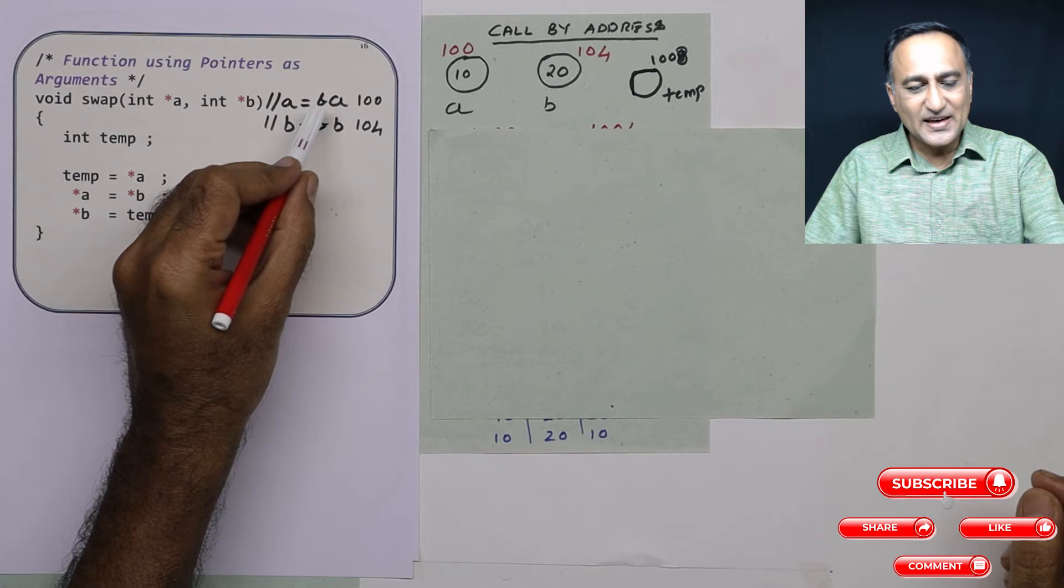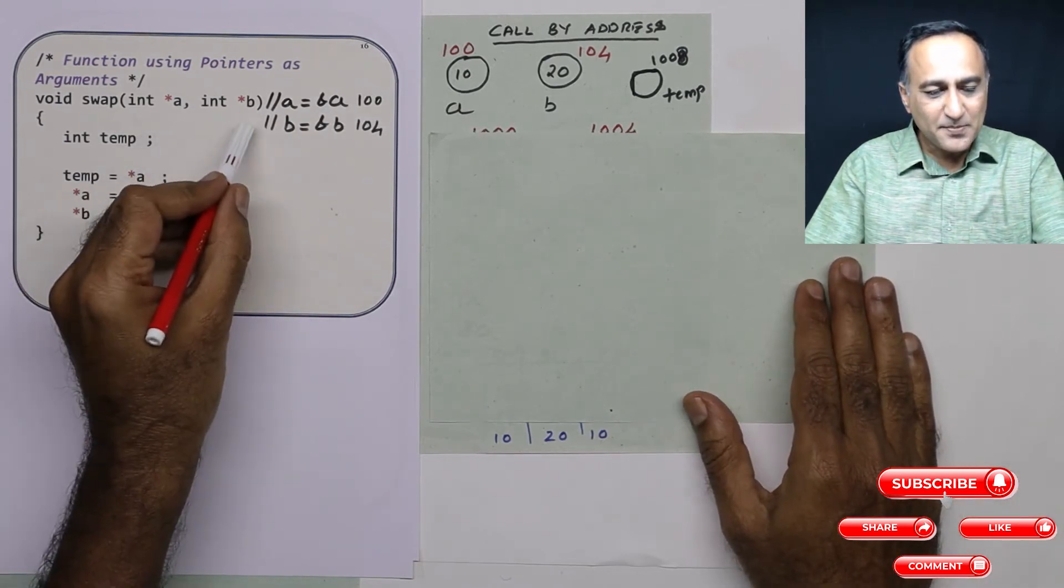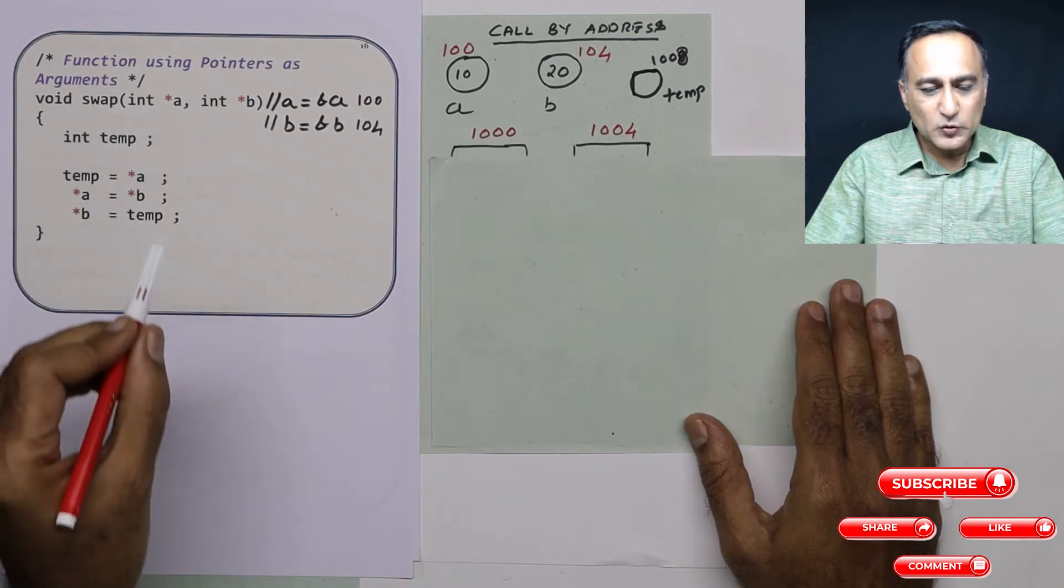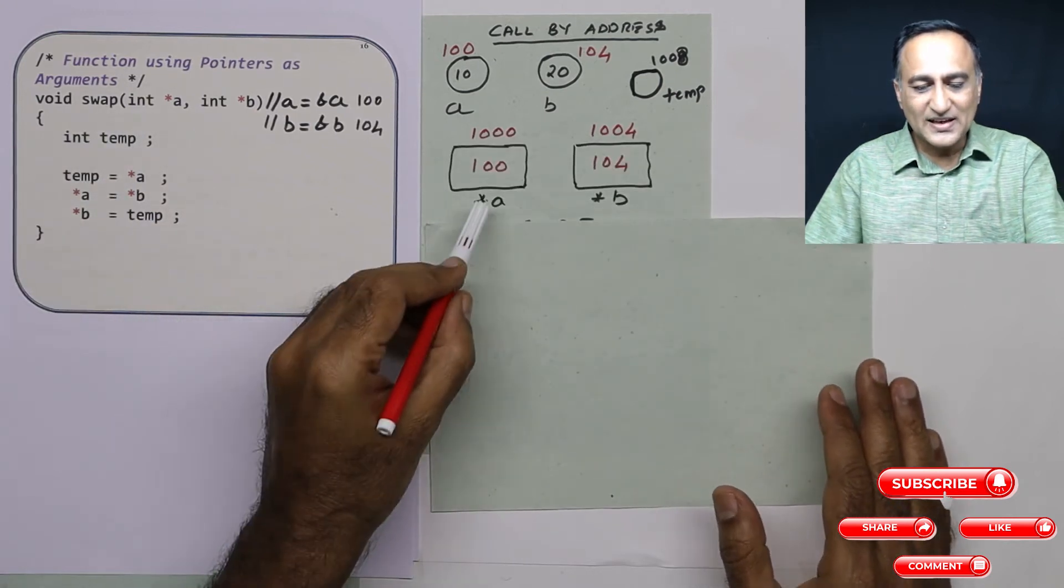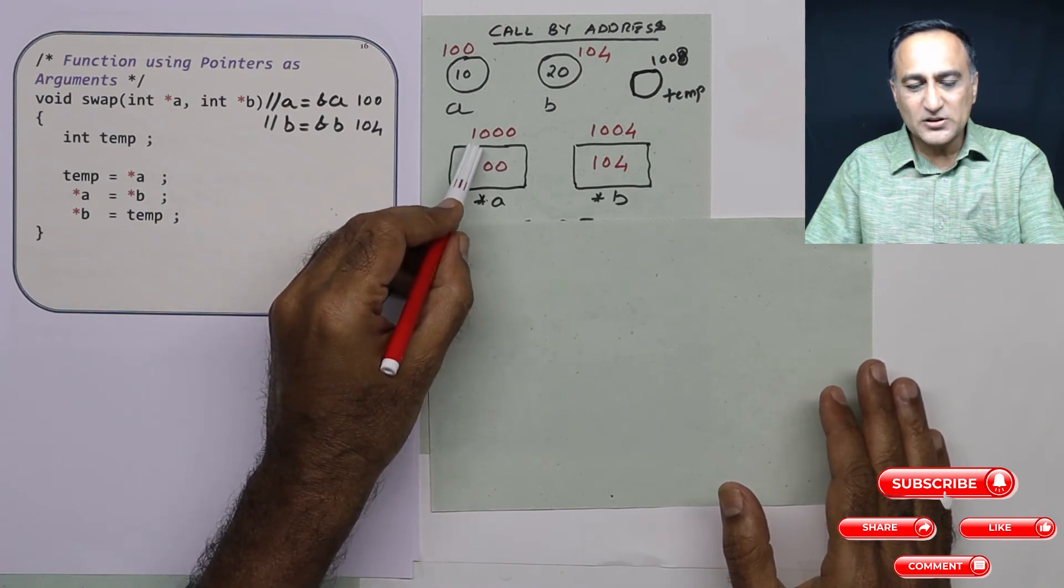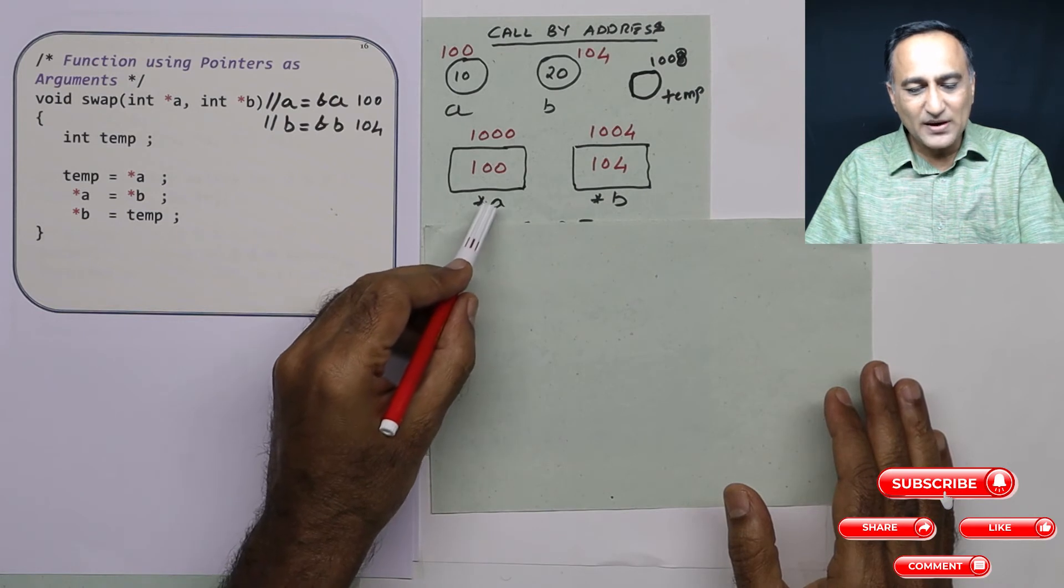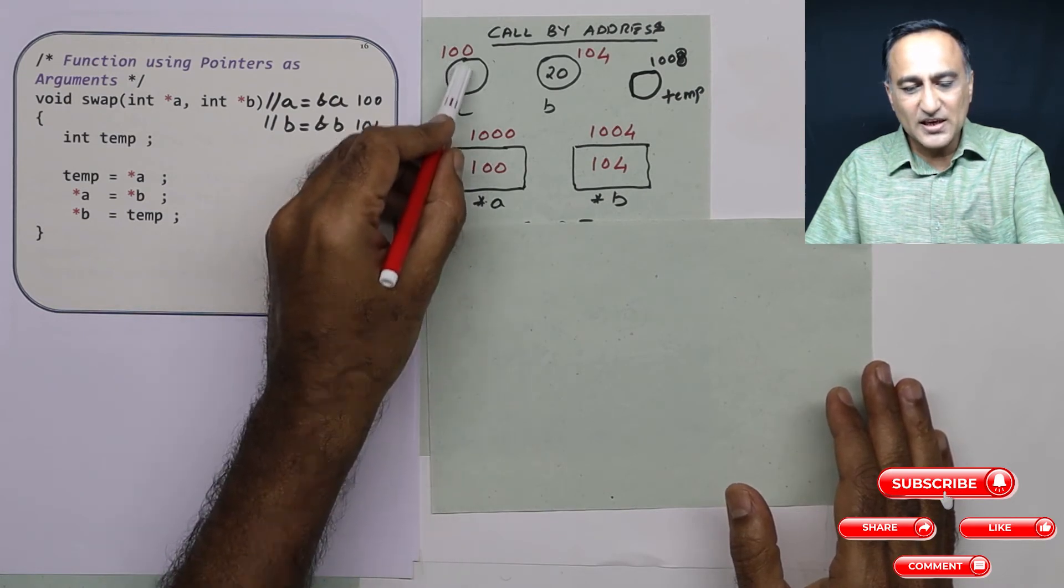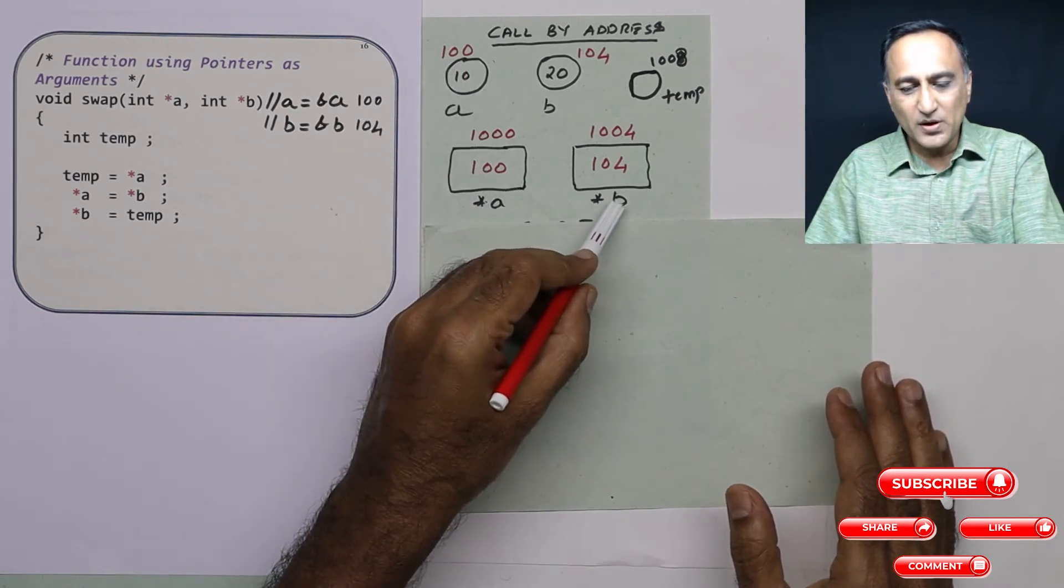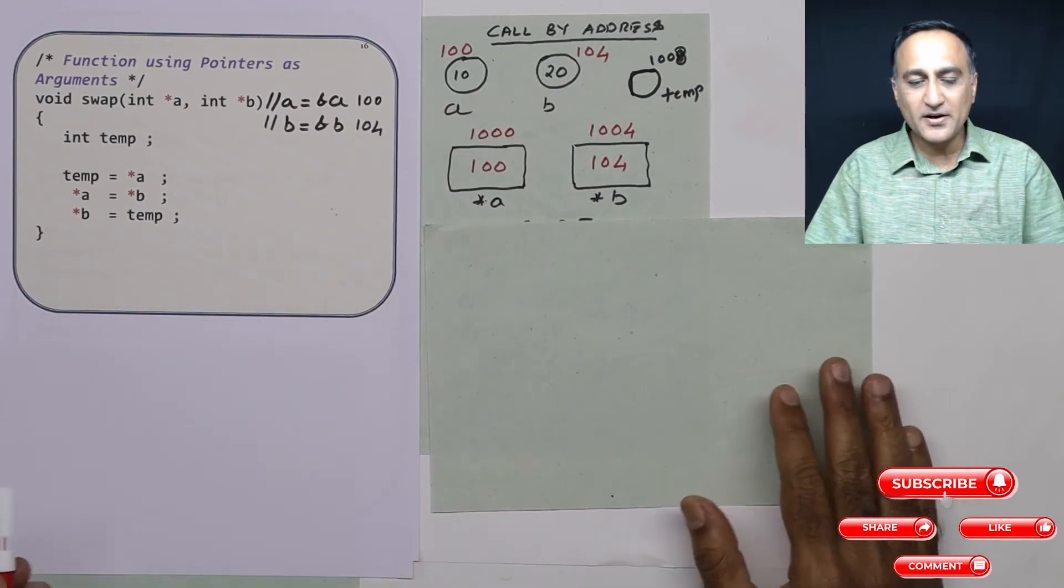So a takes the address of a. So if I had to represent the a and b, star a and b of swap, they would look something like this: star a, star b. They exist at say locations 1000 and location 1004. So what will happen is a will take the address of this a which is 100, b will take this address of b which is 104. So you're getting 104 here.